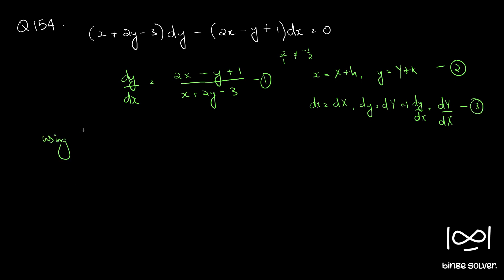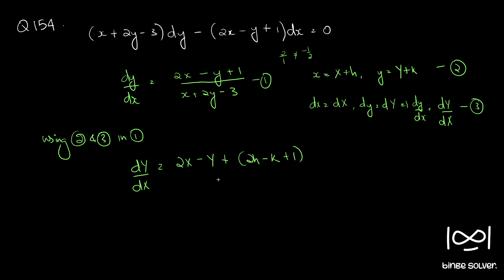Using equations 2 and 3 in equation 1, we have dY by dX equals 2X minus Y plus 2h minus k plus 1, divided by X plus 2Y plus h plus 2k minus 3. This is obtained by substituting x with X plus h and y with Y plus k and rearranging. Call this equation 4.